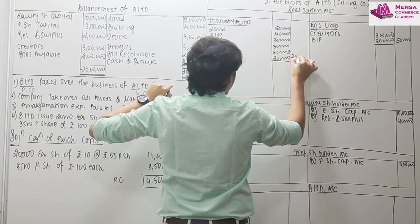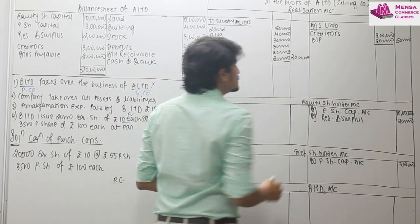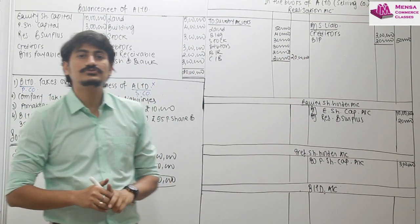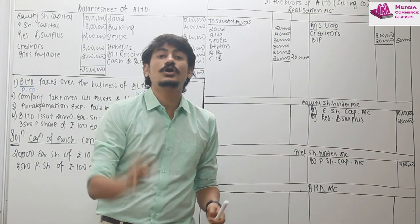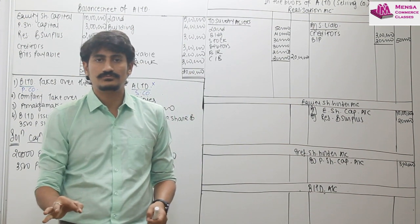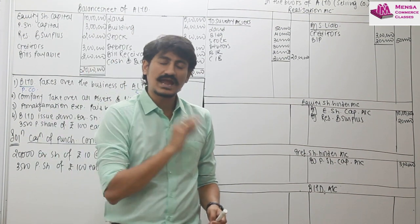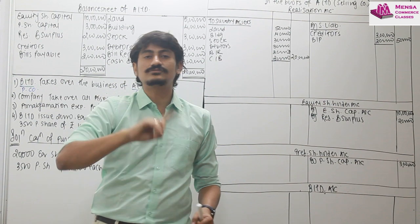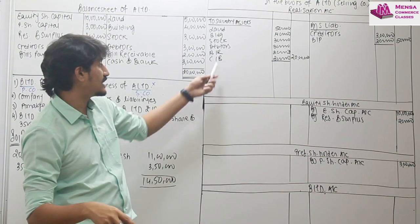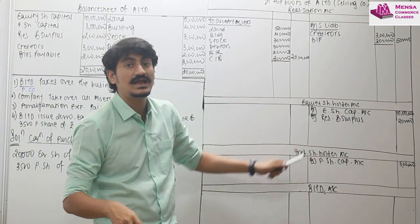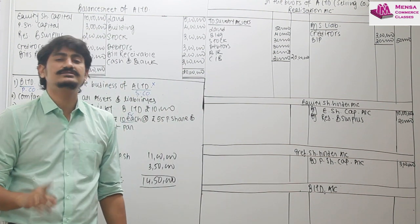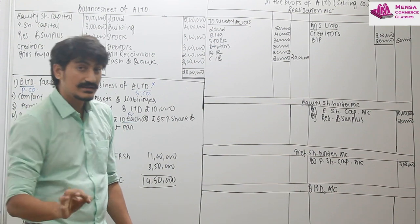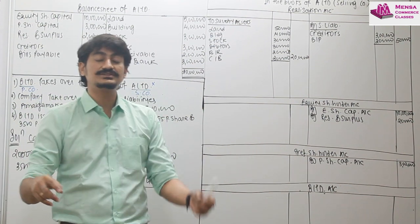Understand one thing. Whenever we are going to transfer the amount from the balance sheet into the respective account, it is always at book value. It is always at book value. So first step: calculate PC. Second step: transfer all the balance sheet items at book value. Third step: record and receive purchase consideration.